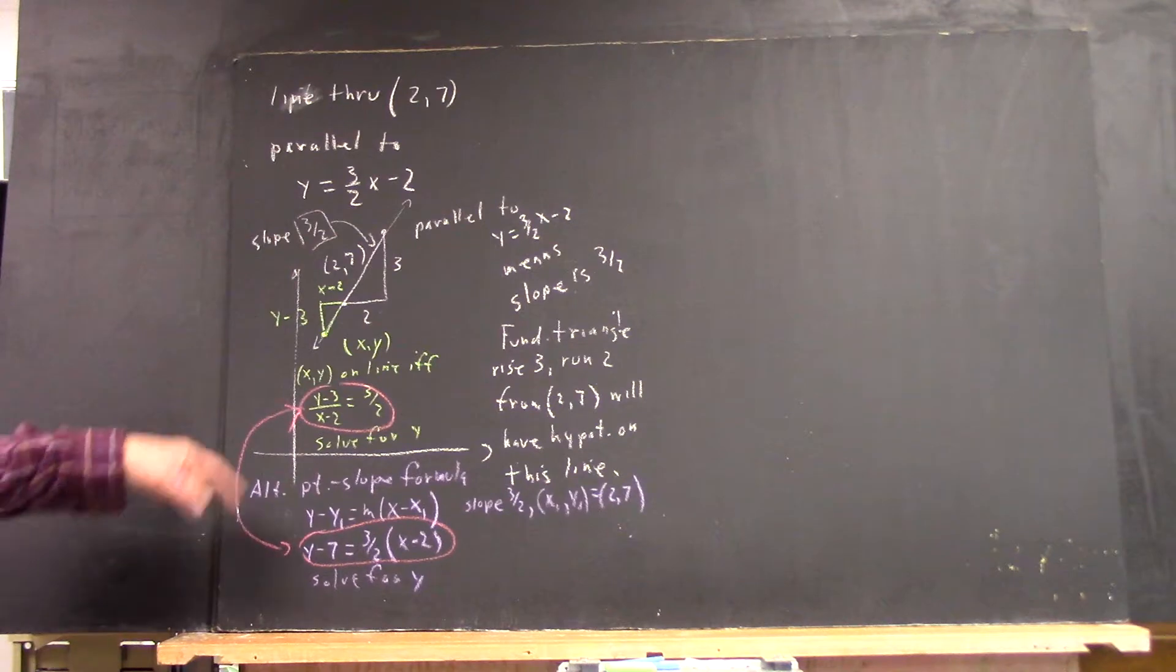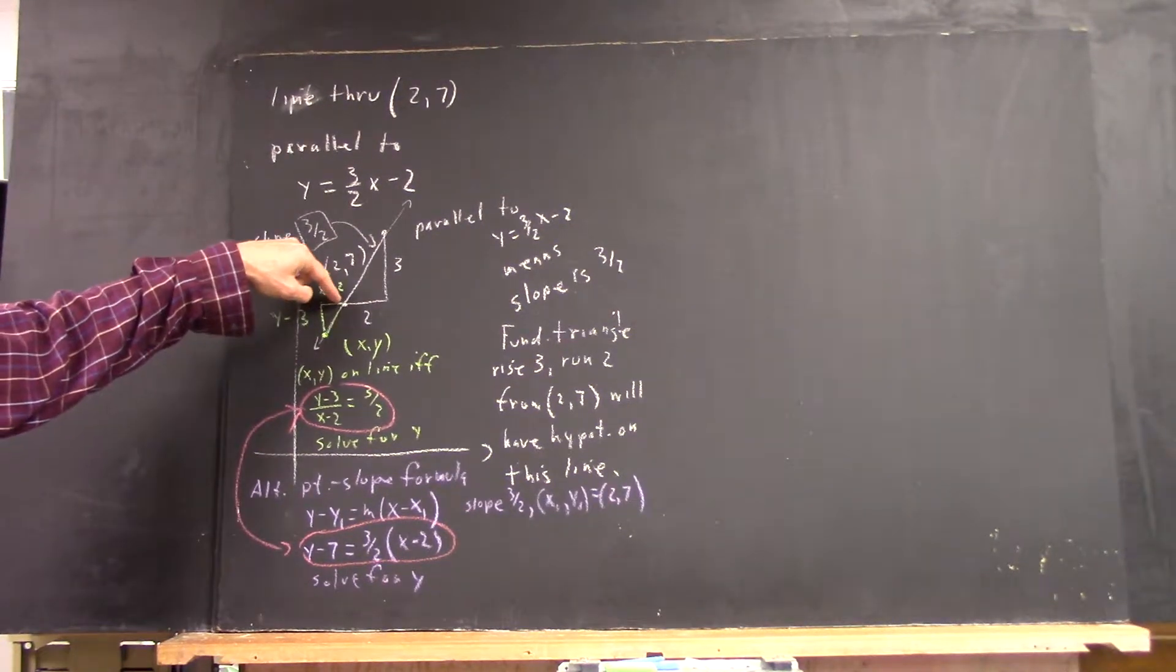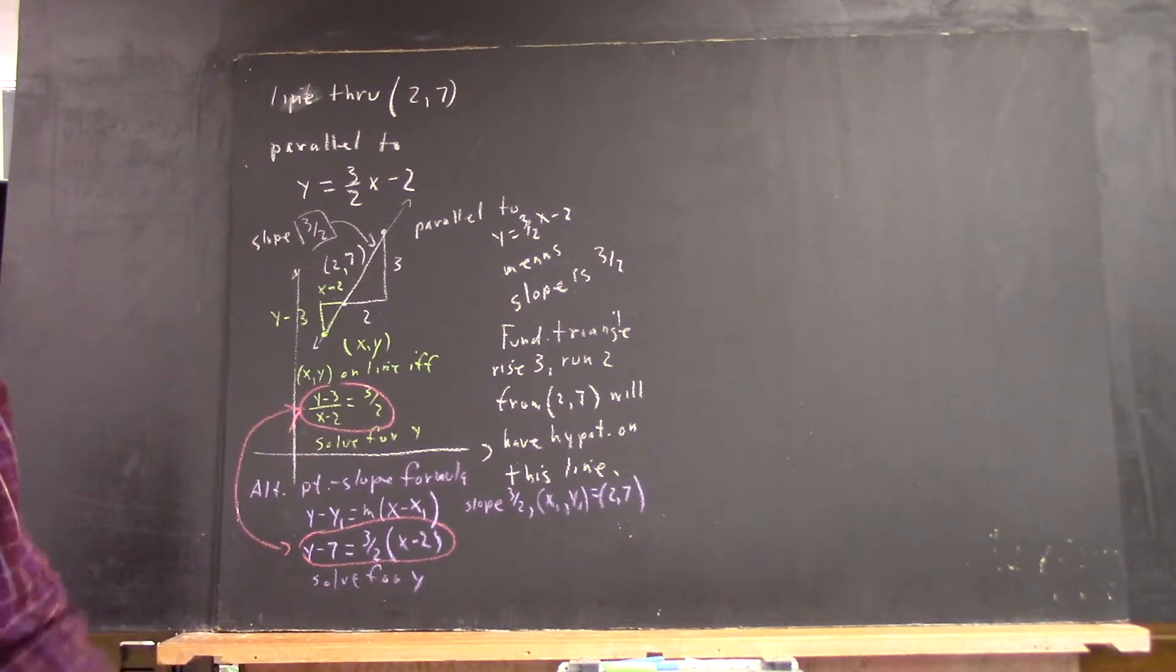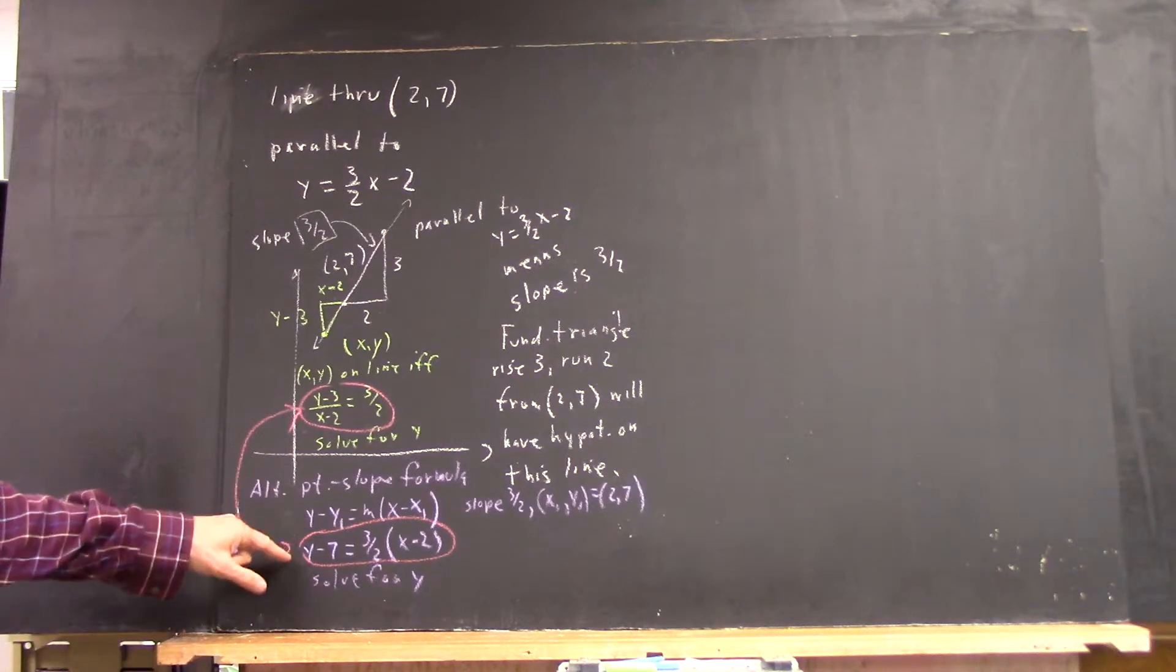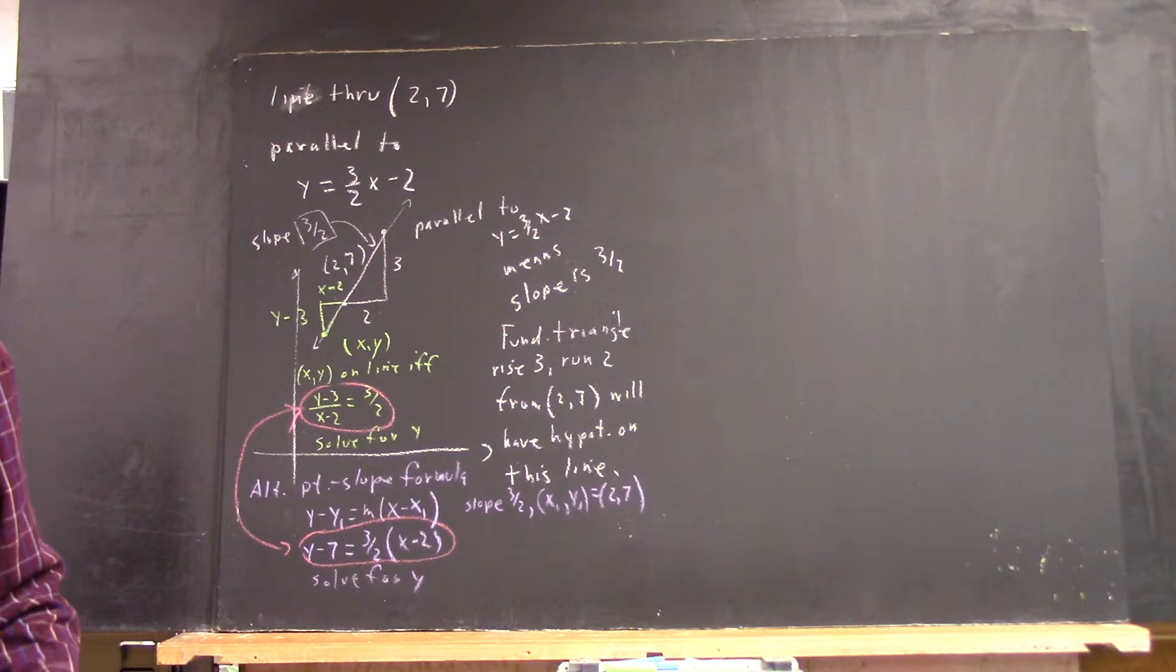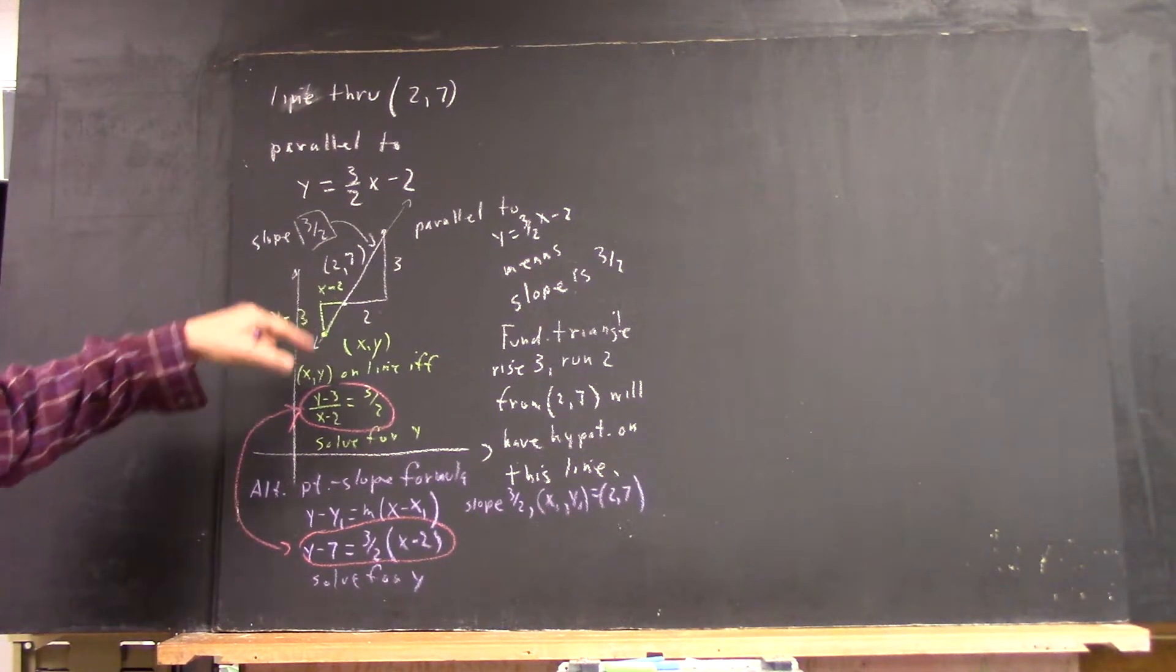So if you've already got the picture, it's really quick to write x, y here, write the rise and the run from x, y to the given point, write this down. It's quicker than writing out the point slope form, but you'd have to also know how to write the point slope form. This shows that the point slope form is identical to what you get if you do this.